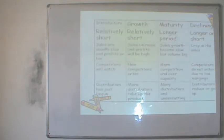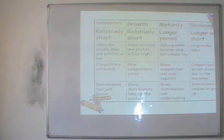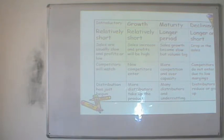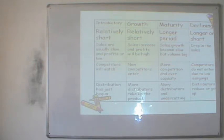In the introductory phase, sales are usually slow and profits low; competitors are watching and distribution has just begun. In the growth phase — a relatively shorter period — sales increase, profits are high, new competitors enter, and more distributors are needed. The maturity phase is a long period: sales volume is big but growth slows, competition is stiff, supply may exceed demand, and undercutting occurs. In the declining stage, there is a clear drop in sales; competitors do not enter because margins are very low, and distributors reduce or give up.